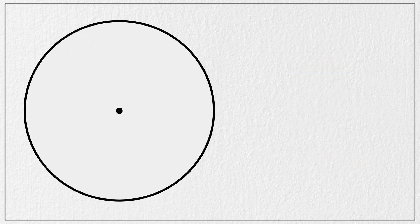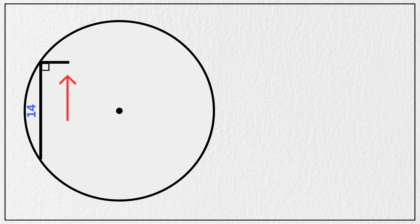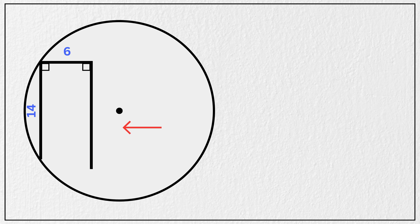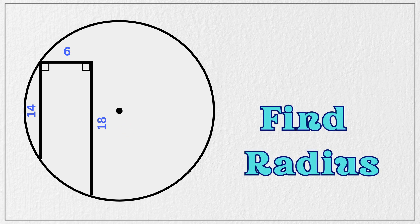We are given a circle, a chord with length 14 units, a perpendicular line to this chord with length 6 units, and another line perpendicular to that one with a length of 18 units. Our goal is to find the radius of this circle.